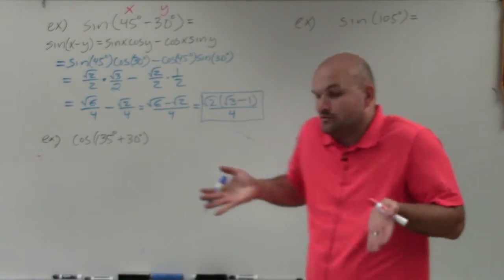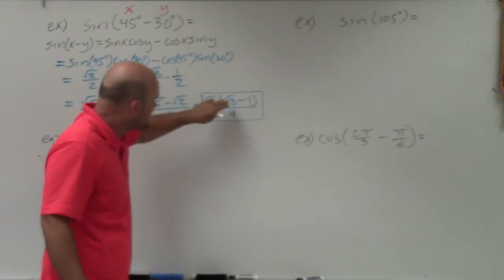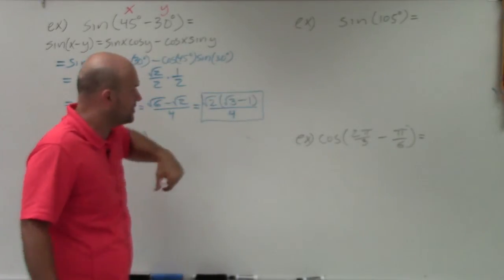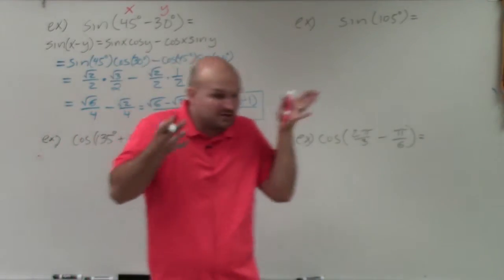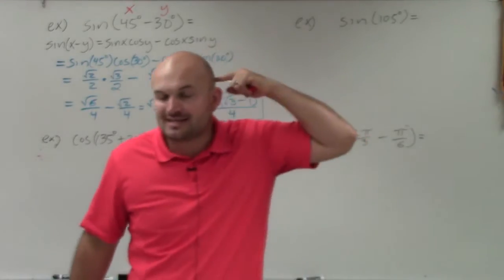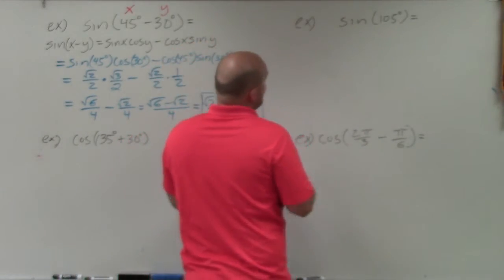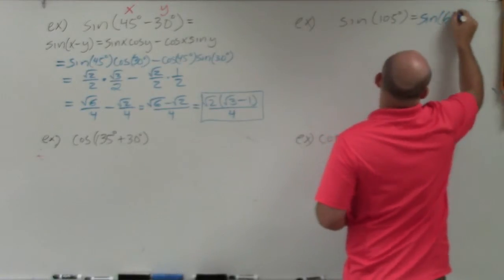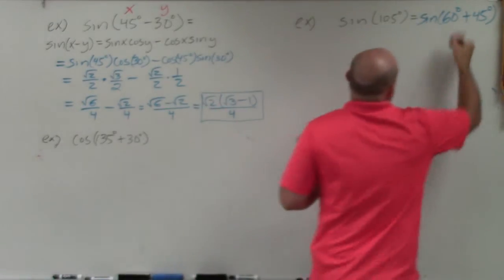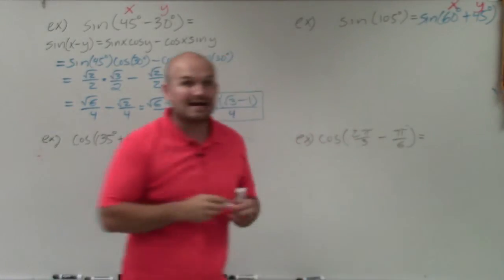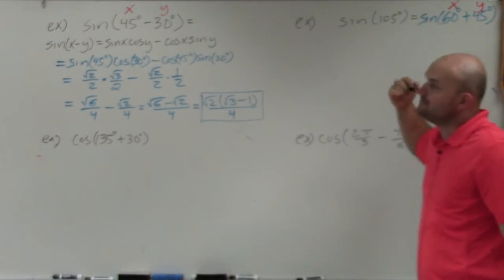Now let's look at sine of 105 degrees — a single angle you might see on a test. Plugging into a calculator gives an approximation; we want an exact answer using square roots. We need to identify x and y — two angles that add to 105. We can rewrite this as sine of (60 degrees + 45 degrees), so x is 60 and y is 45.